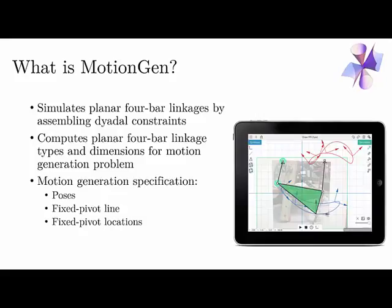For the inverse problem — where you want to compute a linkage system for a given motion — you do not solve for the new mechanism by looking up a database. Our algorithm is fairly simple and fast, so it can compute both the type and dimensions in real time. It essentially gives you the geometry constraints of a given motion, which can be picked two at a time to get a four-bar linkage.